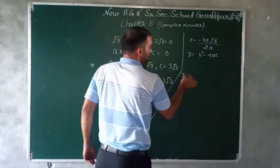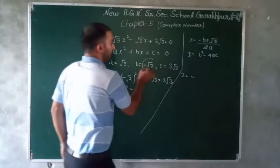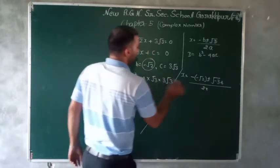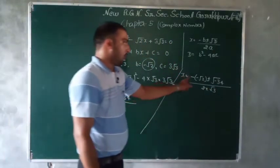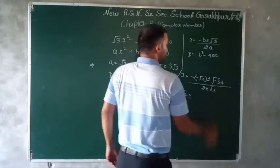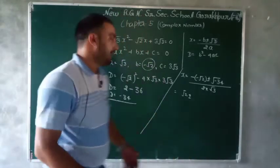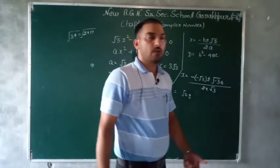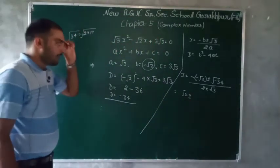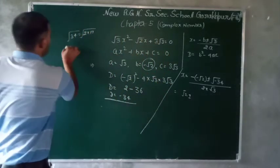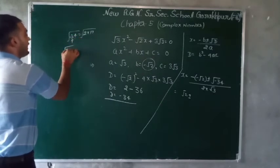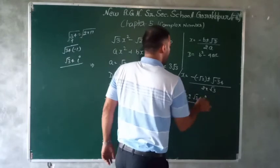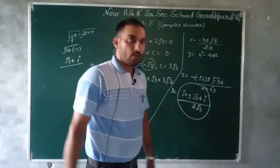According to quadratic formula: x = (-b ± √D) / 2a = (-(-√2) ± √(-34)) / 2√3 = (√2 ± √34·i) / 2√3। 34 के factors 2 × 17 हैं — simplify नहीं होता, so √(-34) = √34·i as it is। तो answer है (√2 ± √34·i) / 2√3। इसको rationalize भी कर सकते हैं — 2√3 को √3/√3 से multiply करके denominator rational बना सकते हैं।